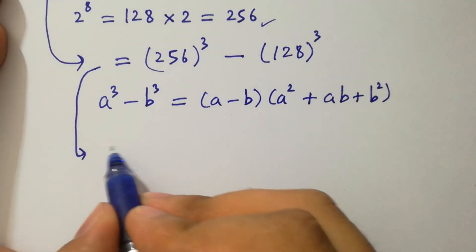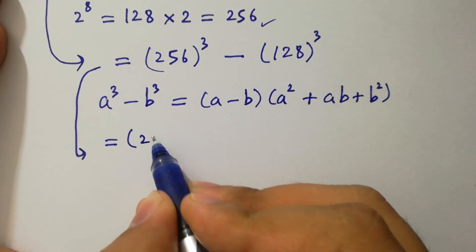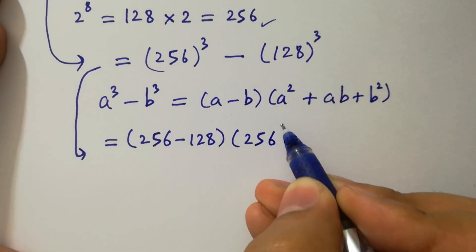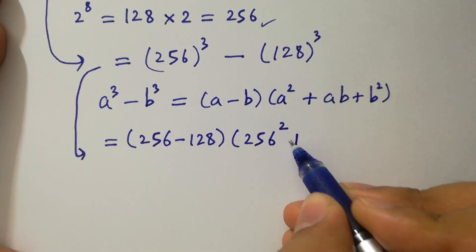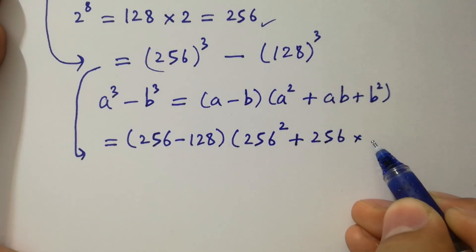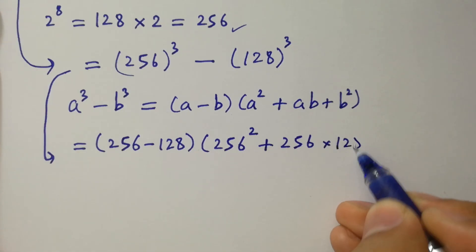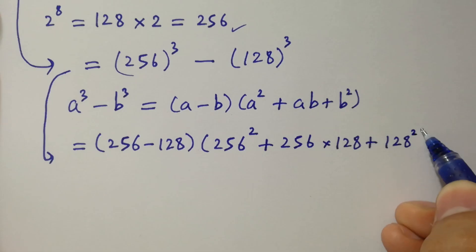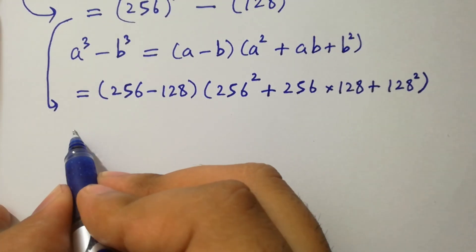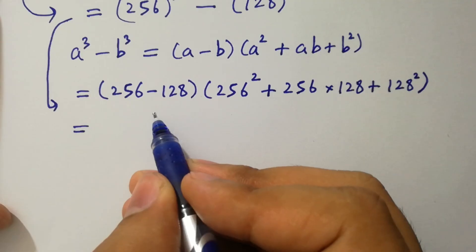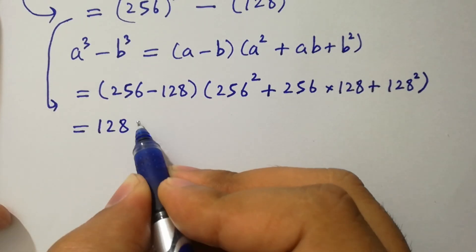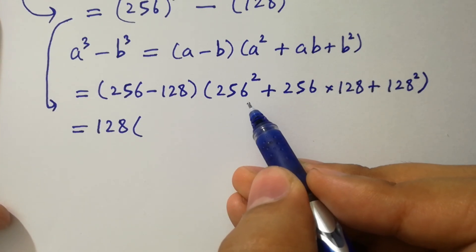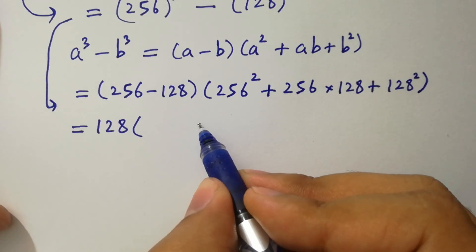So it will be 256 minus 128, times 256 squared plus 256 times 128 plus 128 squared. Here 256 minus 128 is 128, and 256 squared means 256 times 256. We have 65,536, plus 256 times 128.